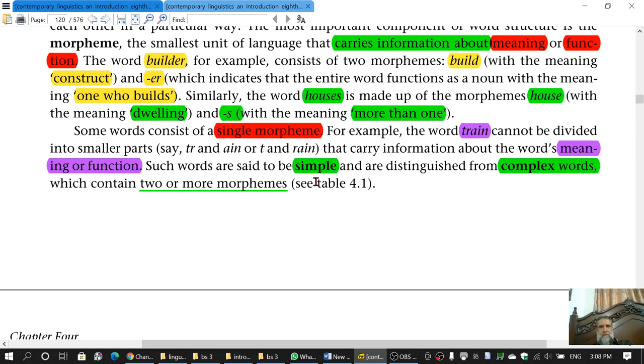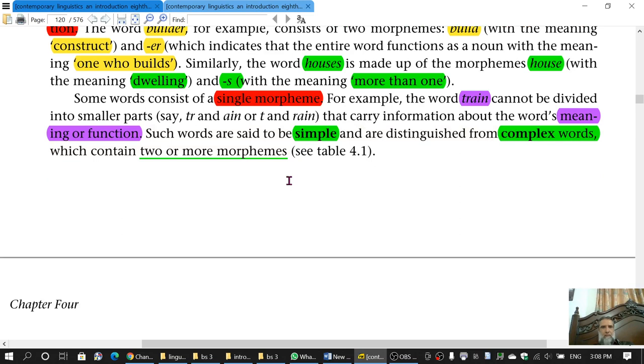This information is very important and it was not there in Yule. So you should remember this and keep it in mind. Some words which have one morpheme, single morpheme, are called simple words. Those which have more than one, more than one means two or three or four or whatever, these are then referred to as complex words. So simple words have one morpheme, complex words have more than one morpheme.